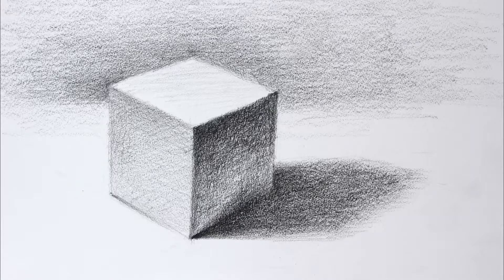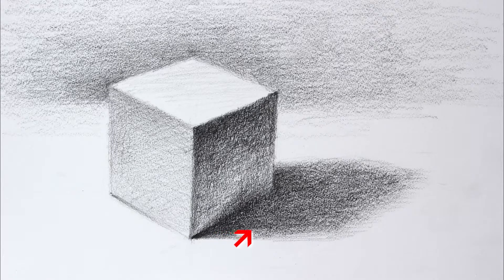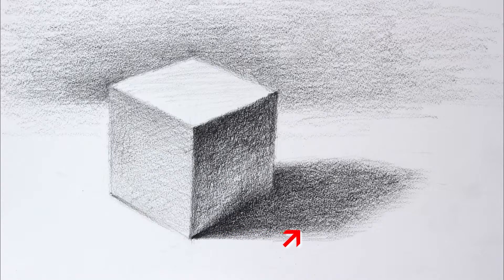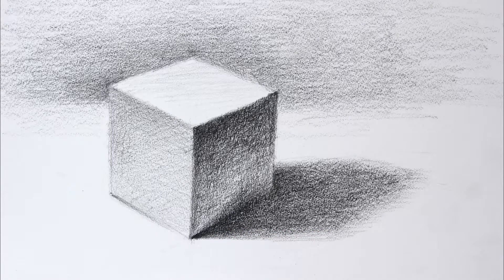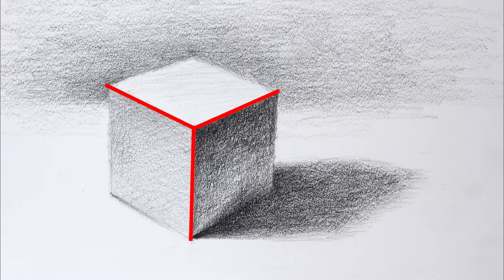Notice how the cast shadow tends to be darker and has more crisp edges closer to the object. And then it tends to become lighter and have softer edges as it moves away from the object. Now let's look at the form shadows on the cube. This object has angles or corners where different sides or planes come together. We see abrupt changes in value at these edges.